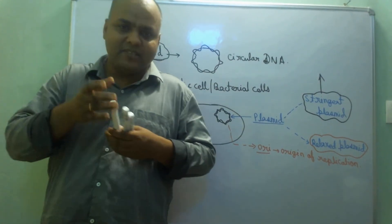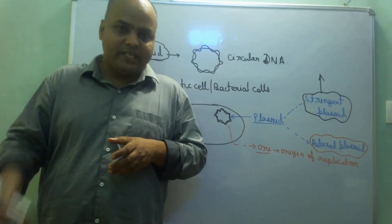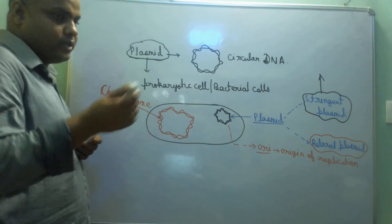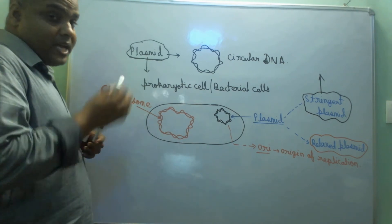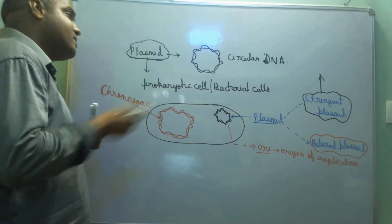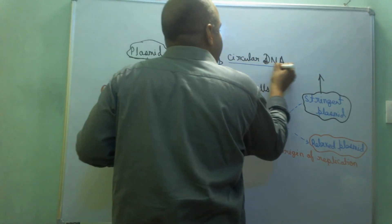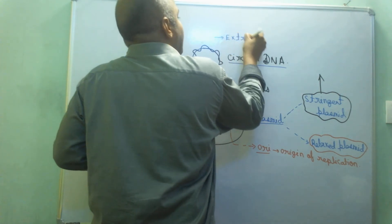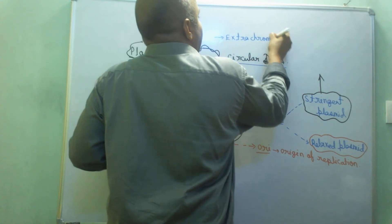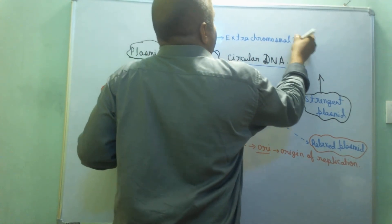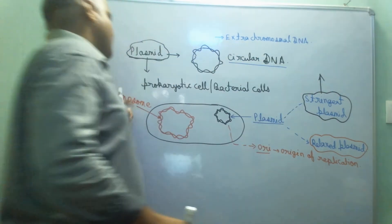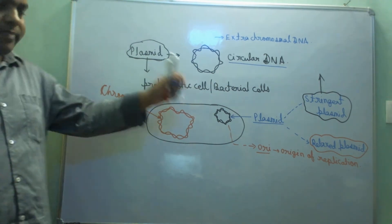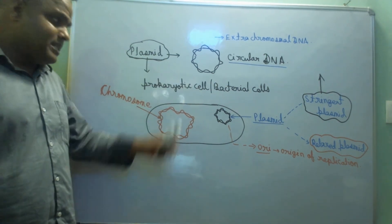Namaste, my name is Ganendul Kumar and I am a biology NEET faculty. Today we will see the topic: what is plasmid? This is only for NEET students. Plasmid is a small circular DNA and it is actually extra-chromosomal DNA. It will generally be present in prokaryotic cells — the only example you need to know is bacteria, but not in all bacteria, only in some bacteria.